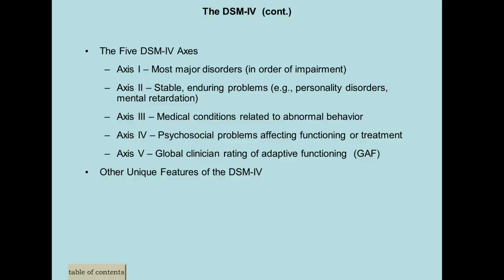Axis Four covers psychosocial stressors — anything affecting the person's functioning, like losing a job. Remember, positive things cause stress as well: getting married, having a baby, winning the lottery. You want to put both positive and negative stressors in that axis. Axis Five is the Global Assessment of Functioning — you just write what their functioning level is: poor, adequate, or superior. When you make a diagnosis, remember it must be a five-axis diagnosis with something on each axis.